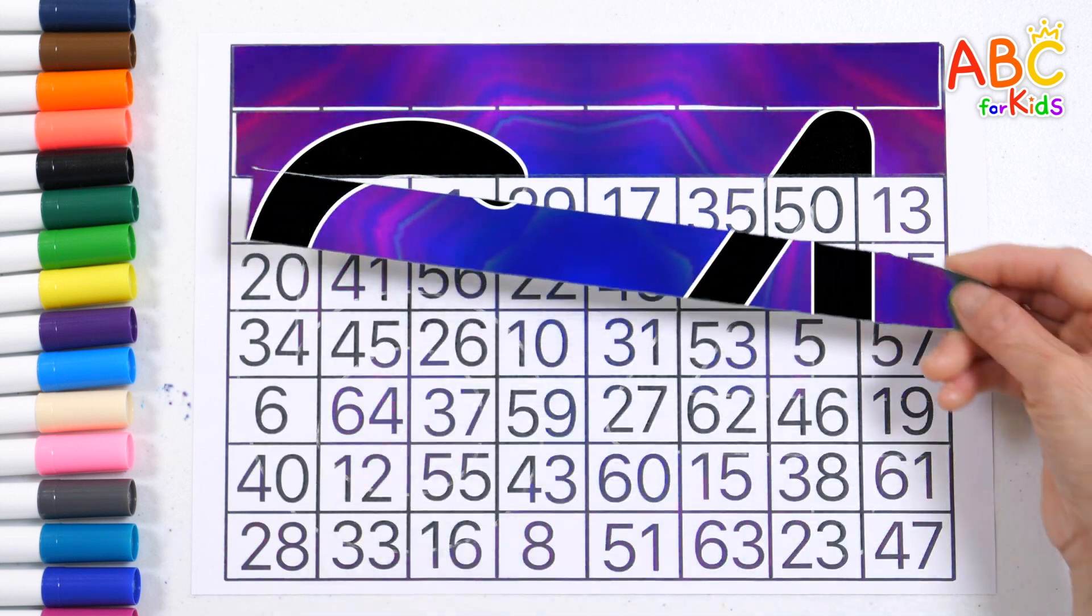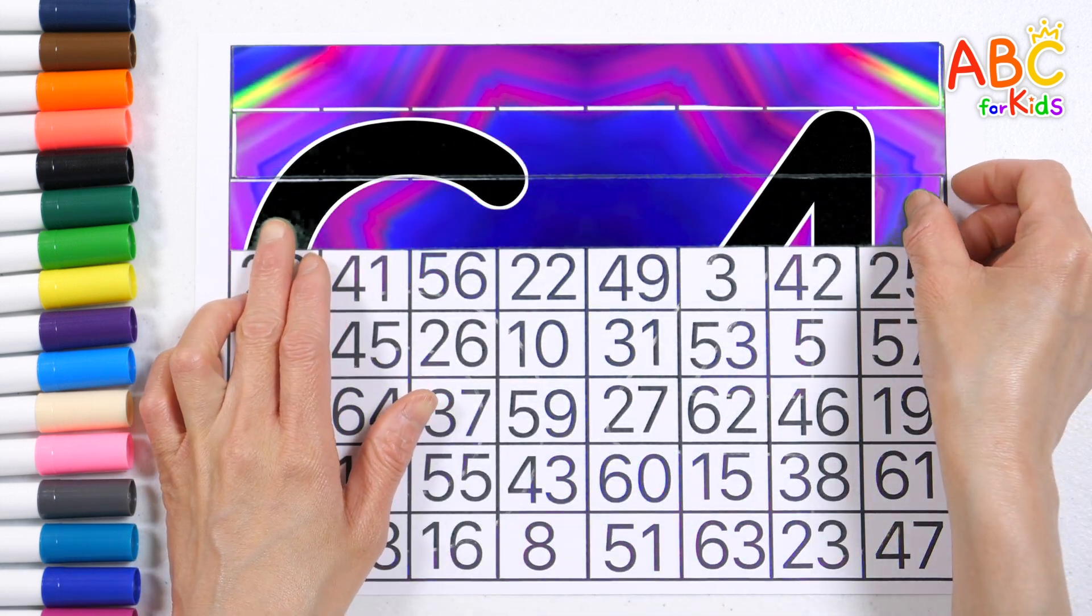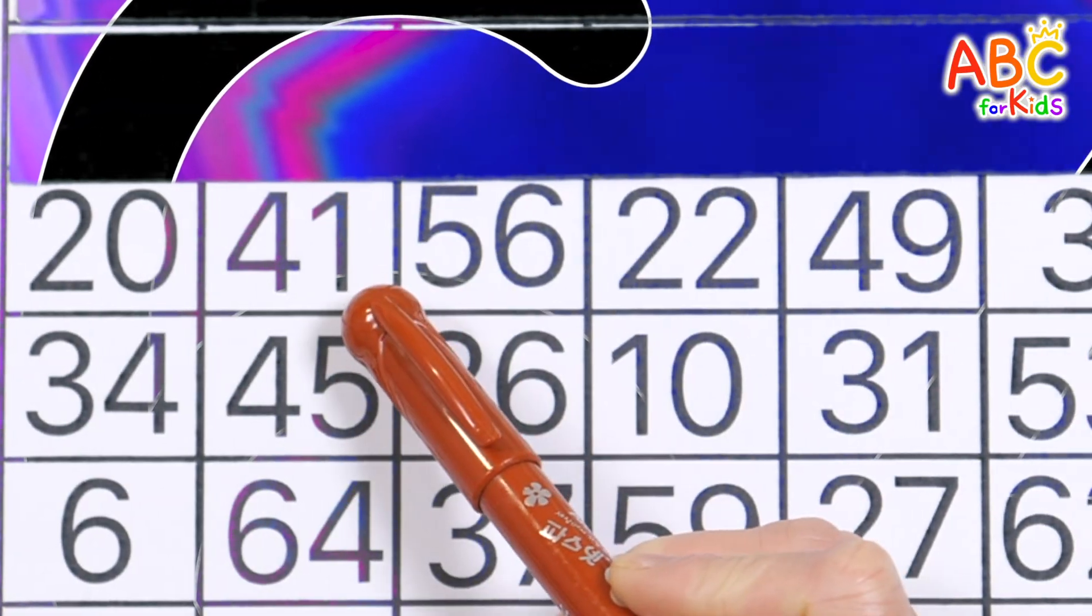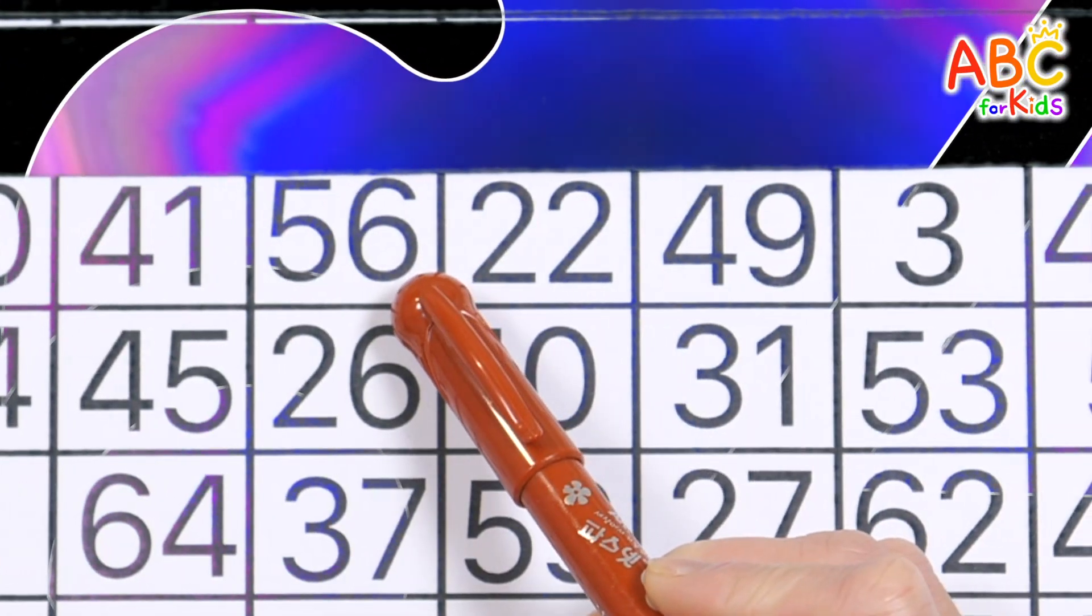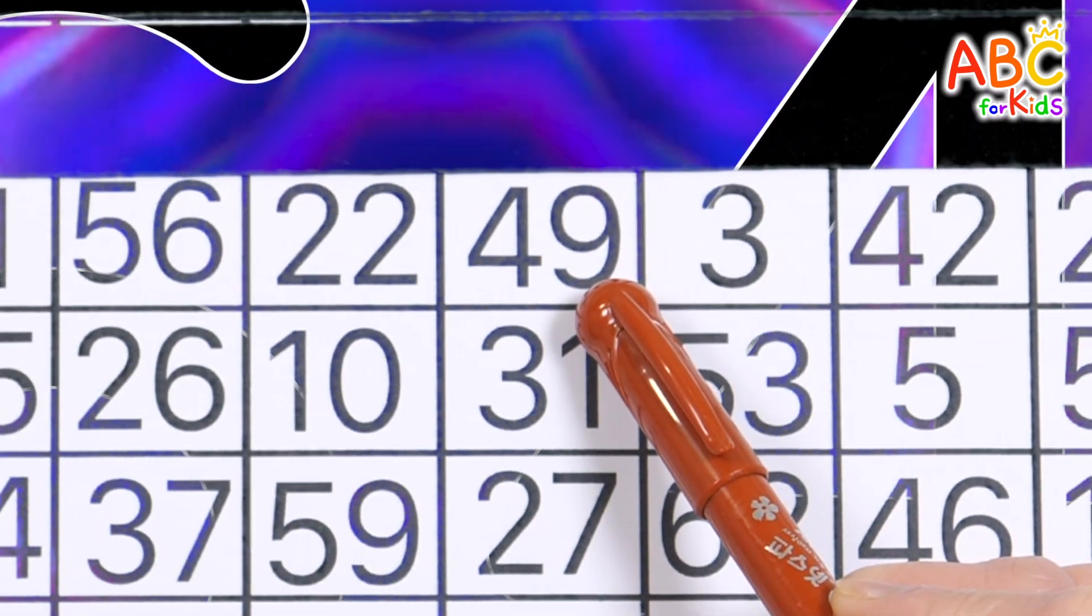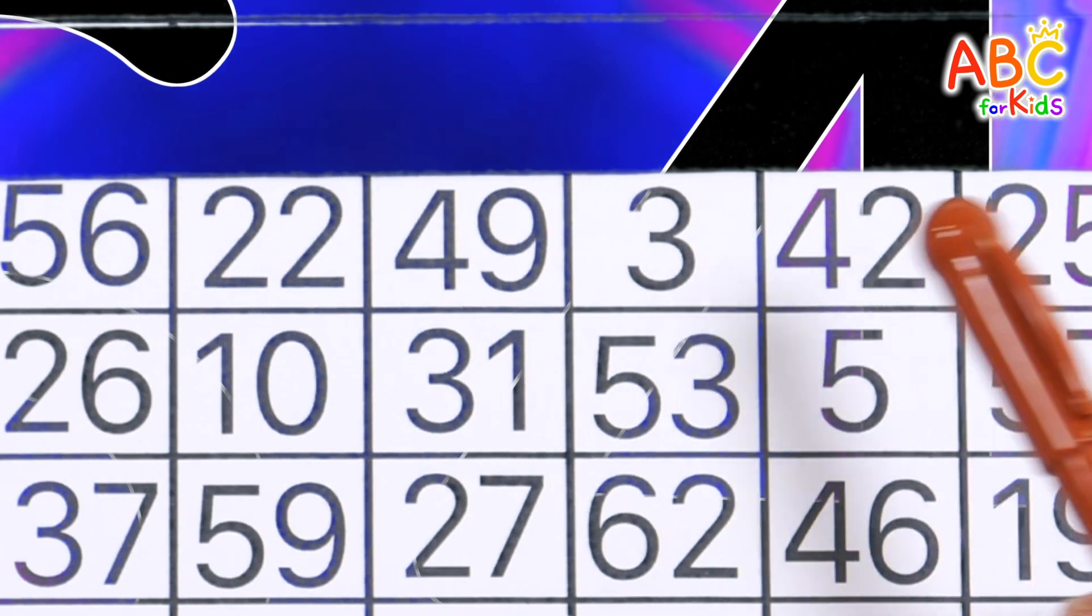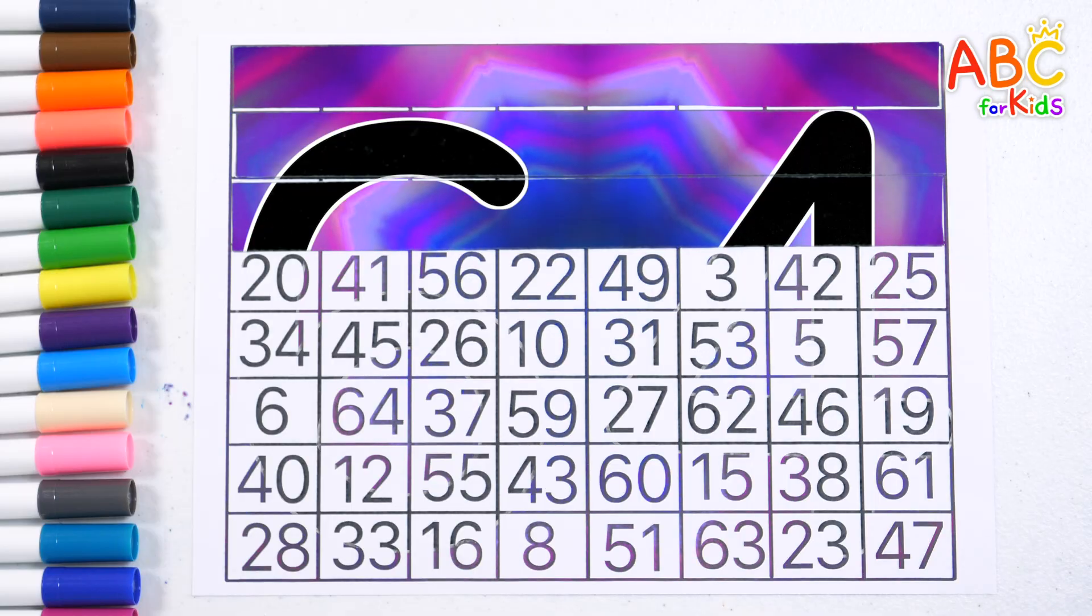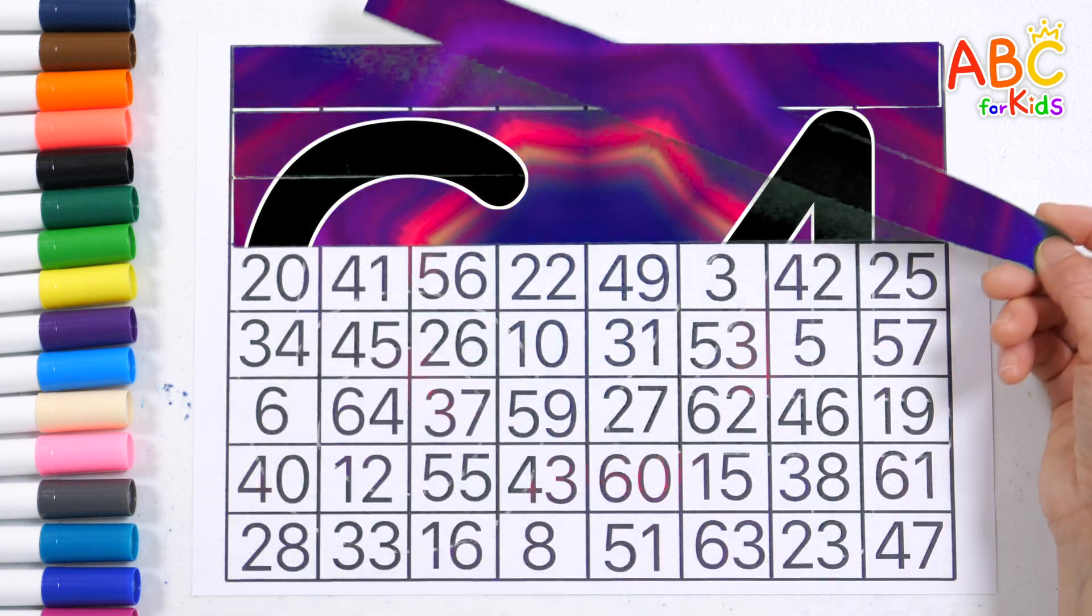What is the hidden number? Let's read the numbers again. 20, 41, 56, 22, 49, 3, 42, 25. Good job! 9, 10! Wow!